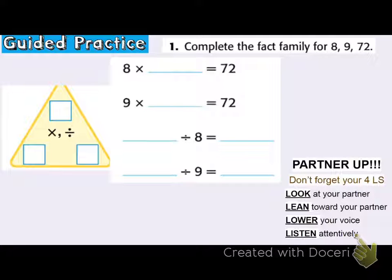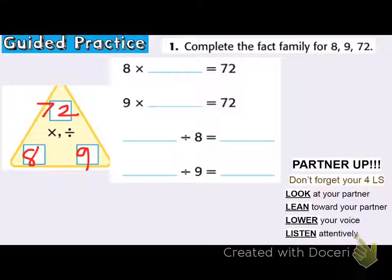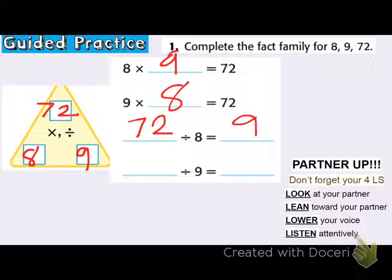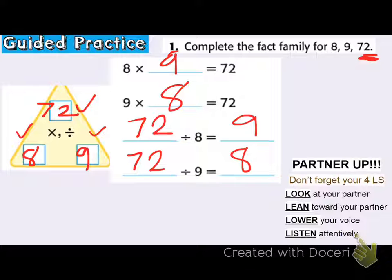Moving into guided practice: complete the fact family for eight, nine, and 72. My fact family is for the number 72. I know that eight times nine is 72, or nine times eight is 72 — that's the commutative property. I also know that 72 divided by eight is nine, and 72 divided by nine is eight. By knowing the fact family of 72, you can see it will help you, because you can use multiplication to help you solve division, or division to help you with multiplication. They're all connected.